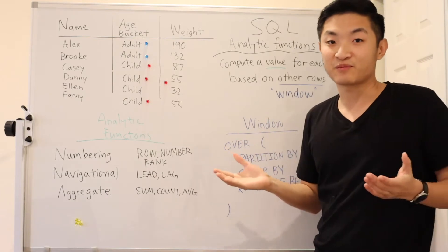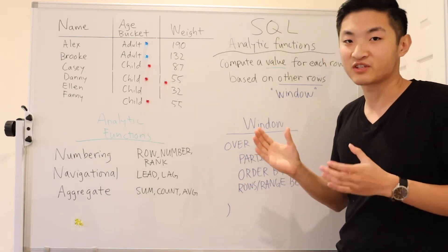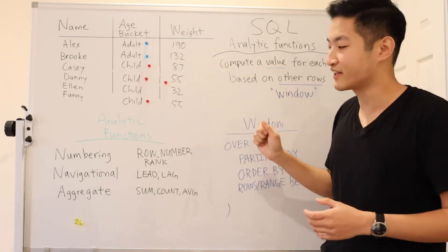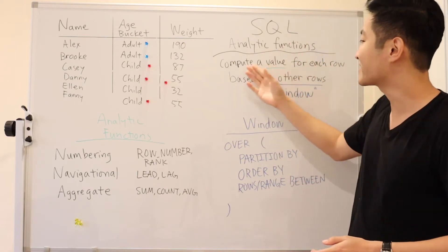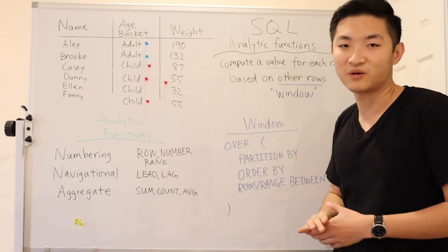This is different from group by, because in group by you have to group the rows first and then compute values for the group. For analytic functions, you can actually compute a value for each individual row.